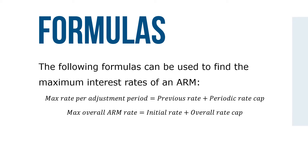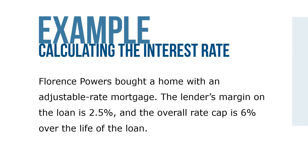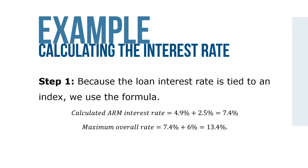Here's an example: Florence Powers bought a home with an adjustable rate mortgage. The lender's margin on the loan was 2.5% and the overall rate cap is 6% over the life of the loan. Step one: because the loan interest rate is tied to an index, we use the formula for the calculated ARM interest rate.